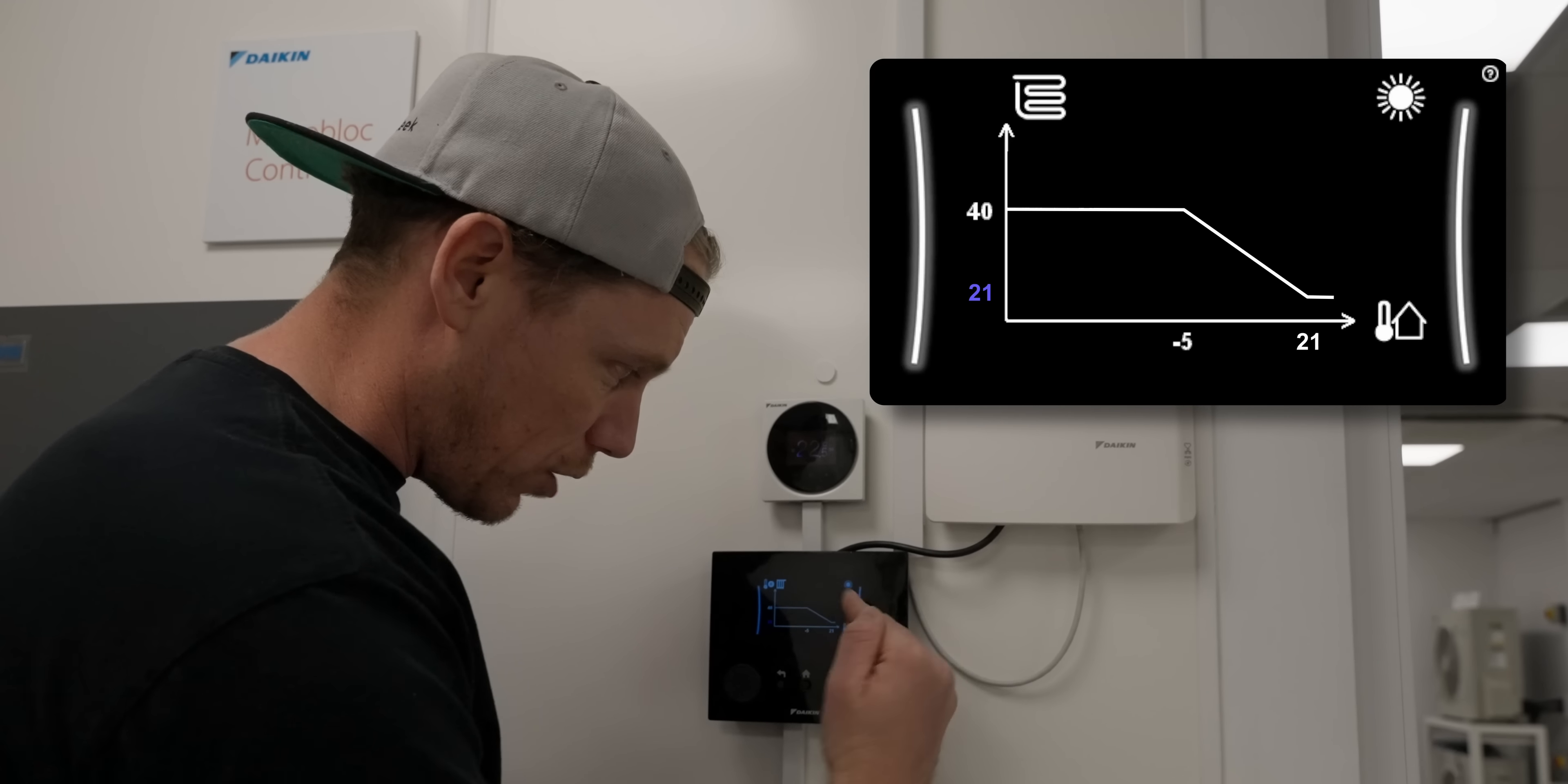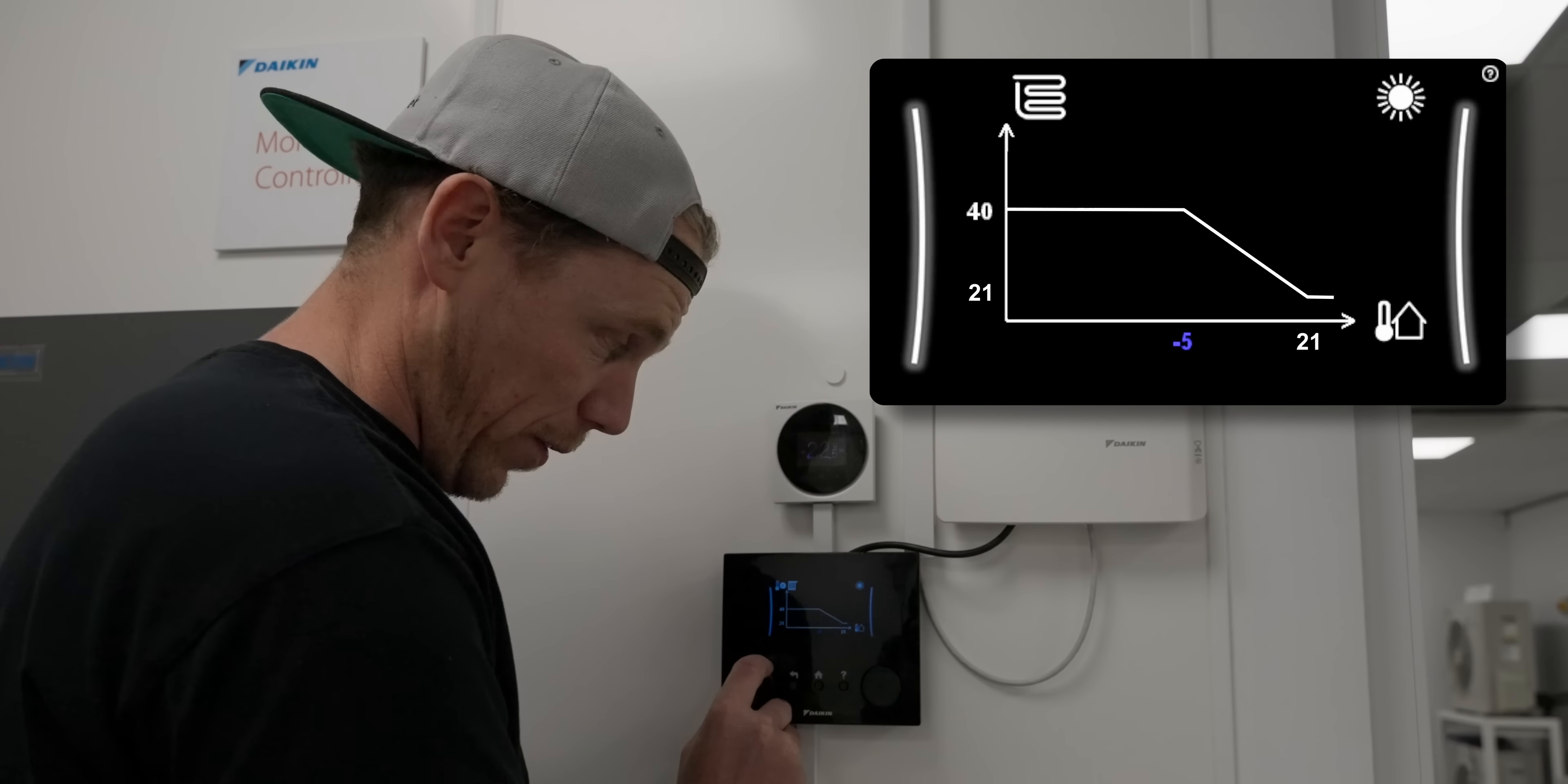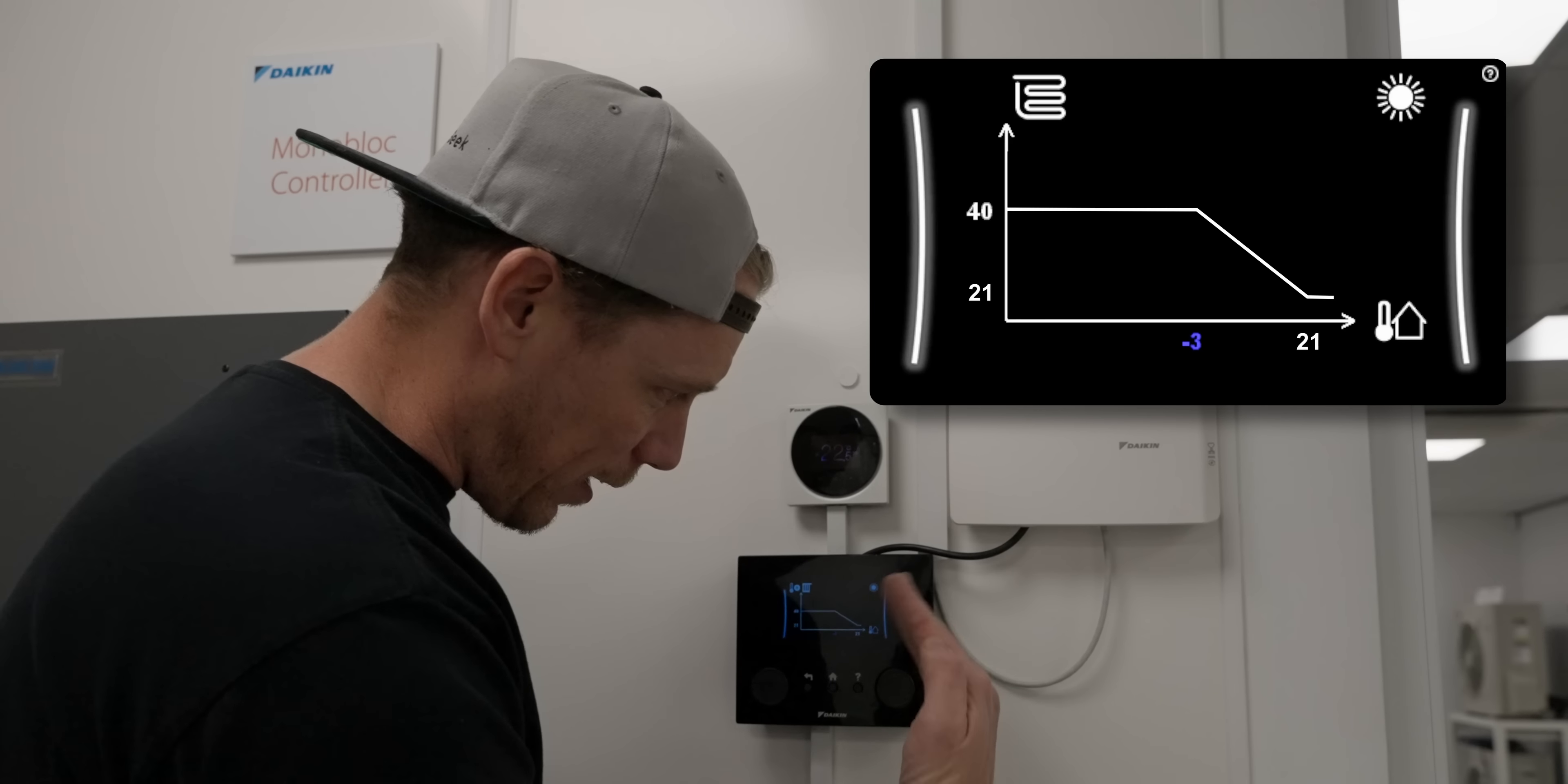Then what we want to do is make sure that we change our design temperature, which is minus five here. If we designed for minus three, change minus five to minus three and that helps angle our pitch.